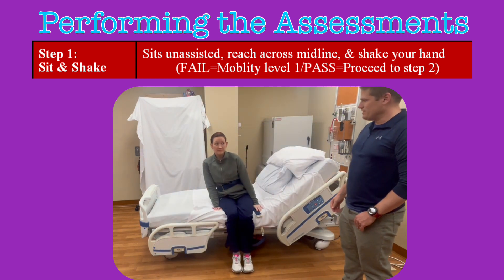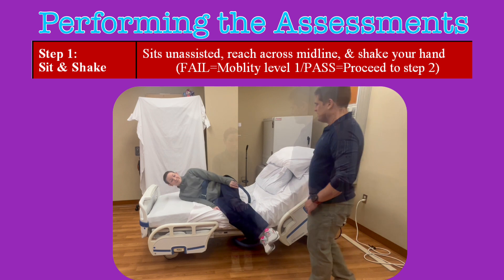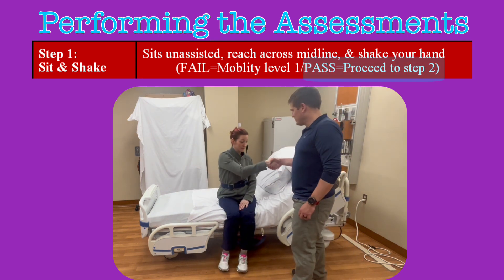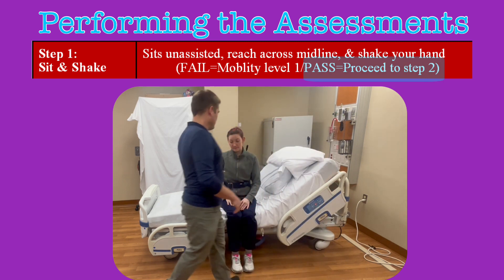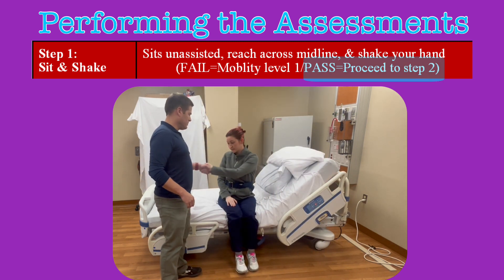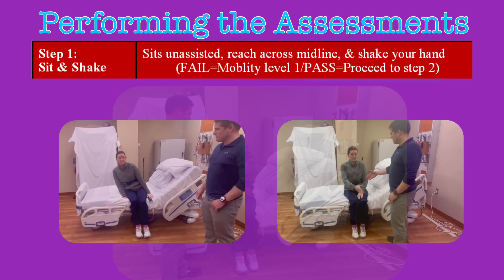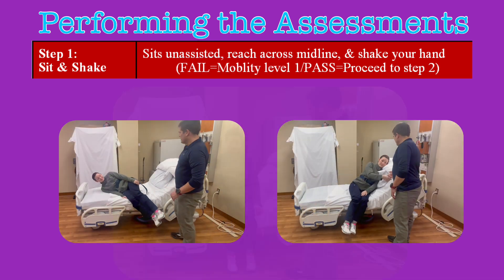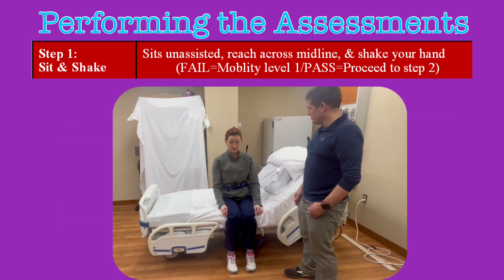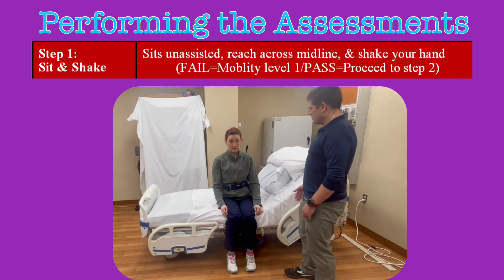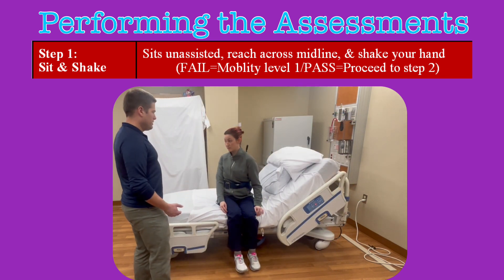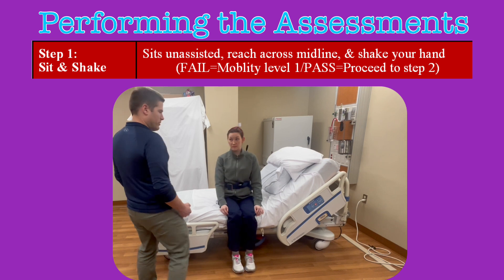Are they unable to maintain the seated position independently? Or do they lean one way or the other while attempting to reach across the body? If they have the required strength, they shouldn't have these issues — they should be able to sit steadily and accomplish this. If you observe either of these issues, they fail step one. Keep in mind, we are not assessing arm strength. If the patient has an arm in a sling or for some other reason they are unable to reach across and shake your hands, you just need to have them twist their body from their core to test their strength and balance. Handshaking just happens to be an easy way to accomplish this.